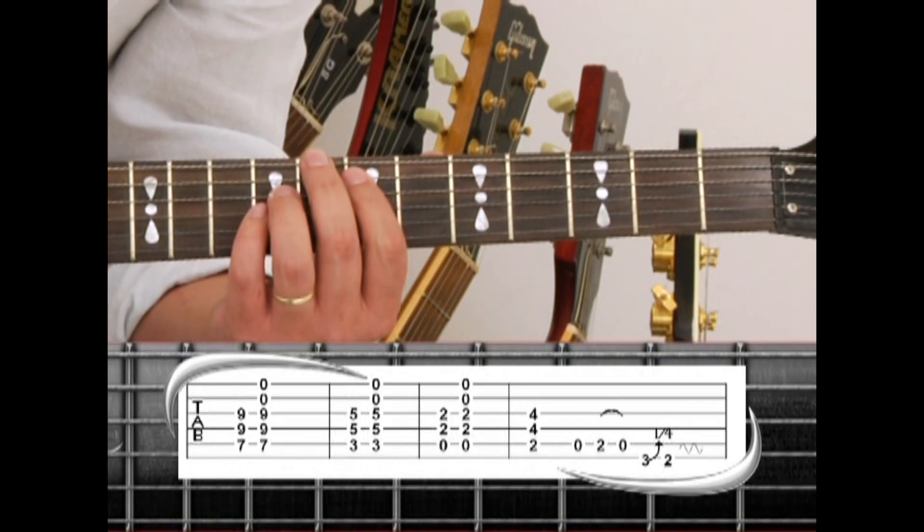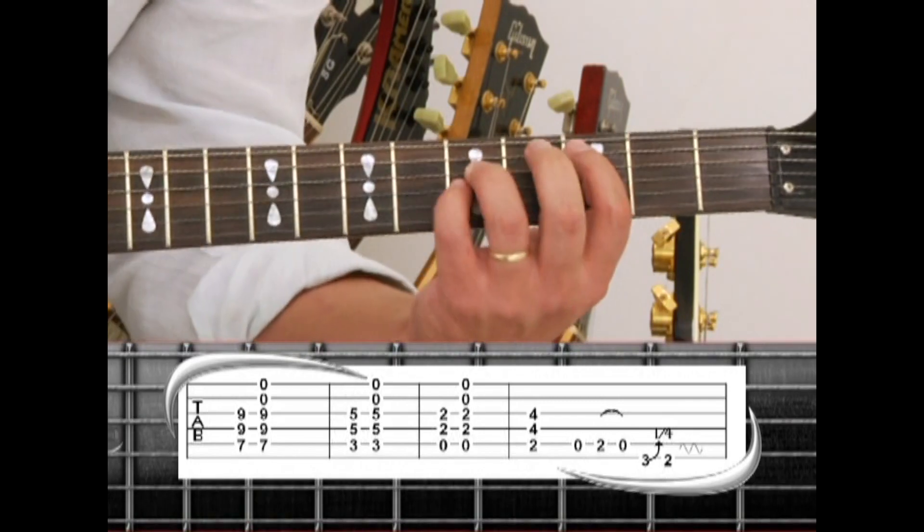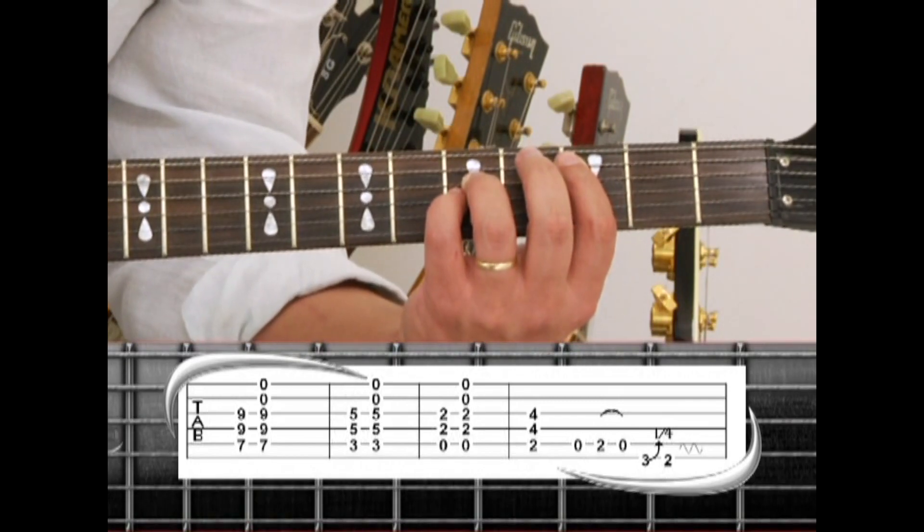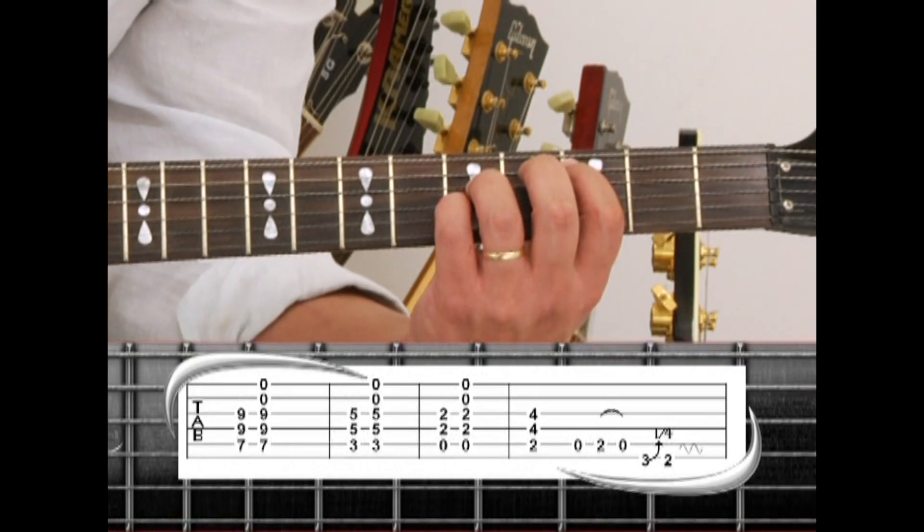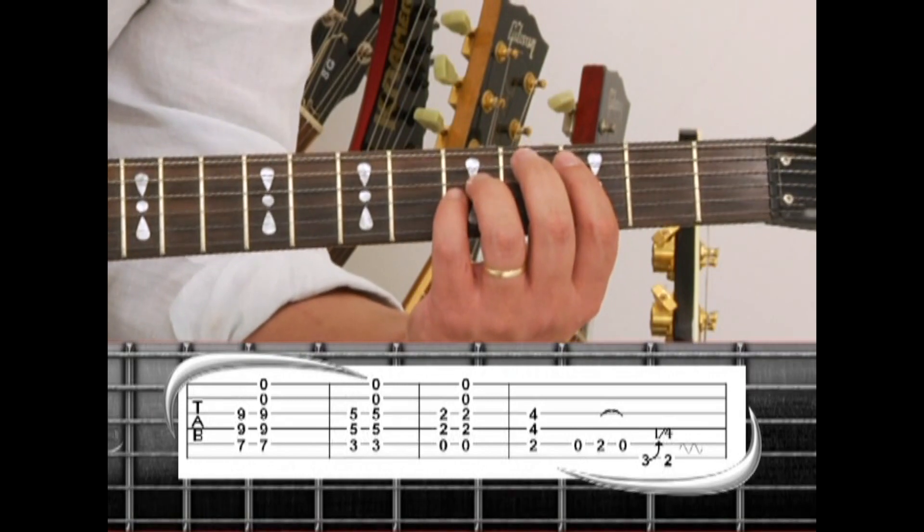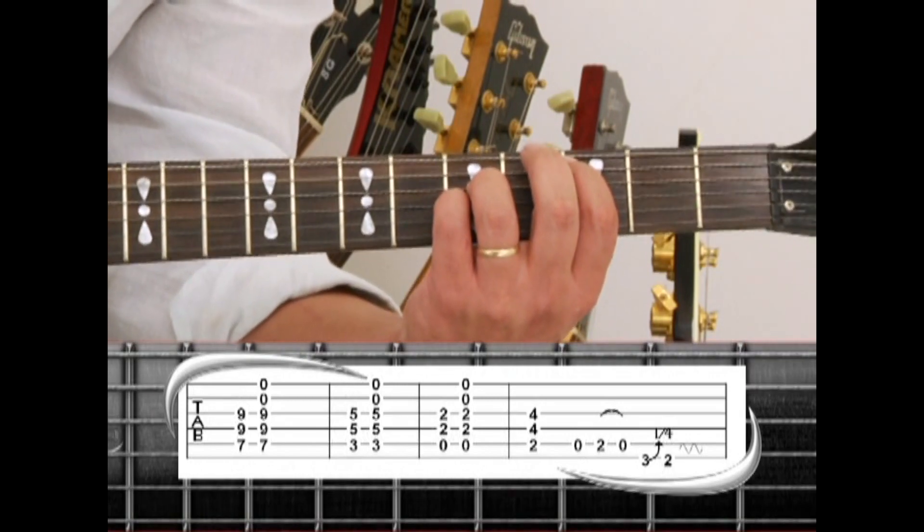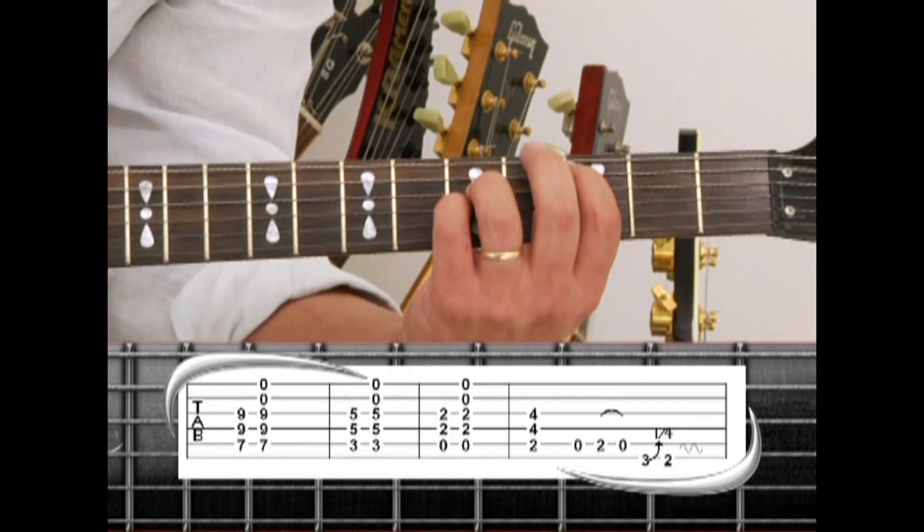Move the same fingering down to the 5th string 3rd fret and you have C5. This is played with fretted notes as well as adding the 1st and 2nd string for a C5 drone. That's C5, C5 drone.